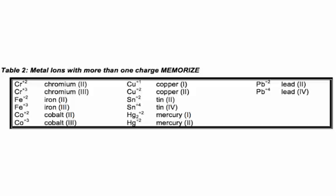In one of the tables in your workbook, you have this. These are the seven metal ions that have more than one charge. You are to remember what they are.